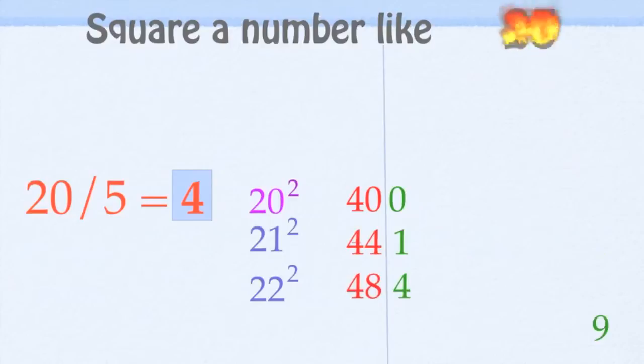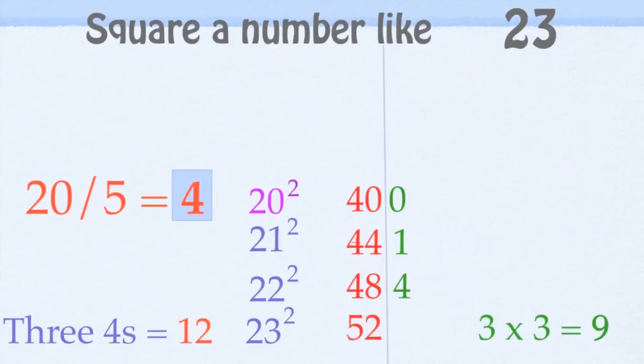Let's do 23 squared. 23 squared then would be 3 4's. That's 40 plus 12 is 52. And then 3 times 3 is 9. Bring the 9 over, and 23 squared is 529.